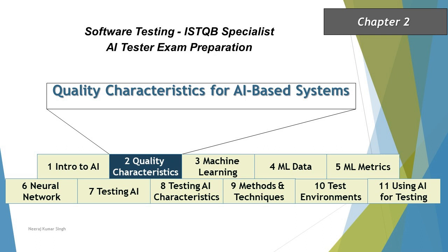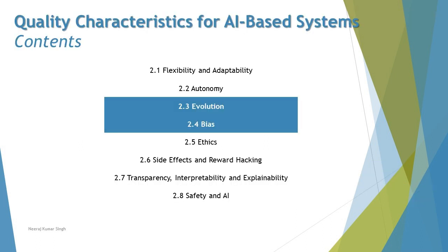Hello friends and greetings for the day. Welcome back to another tutorial on our ISTQB AI tester certification. We are in chapter 2 talking about quality characteristics for AI-based systems, and we'll be continuing with our next segment on this chapter today, which is 2.3 Evolution and 2.4 Bias.